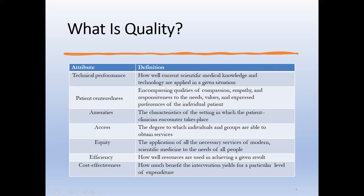Equity: the application of all necessary services of modern scientific medicine to the needs of all people — or as close as possible, leveling that playing field. Efficacy: how well resources are used in achieving a given result. Cost effectiveness certainly matters. There's often more than one accepted way to treat or diagnose a patient. When a culture and sensitivity identifies bacteria sensitive to Antibiotic A — which is very expensive — but reasonably sensitive to Antibiotic B at one-fifth the cost, those decisions are sometimes made on a cost-effectiveness basis. If it's nearly as effective, it's a judgment call.